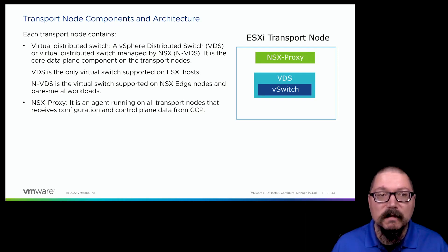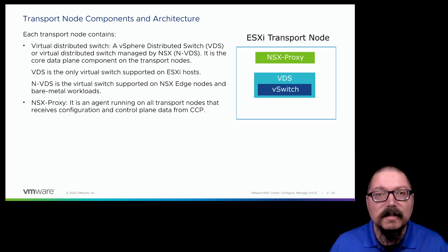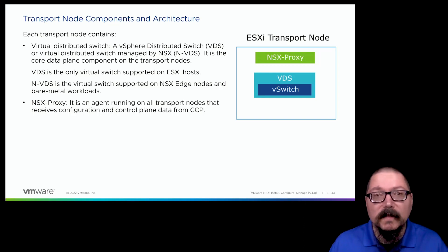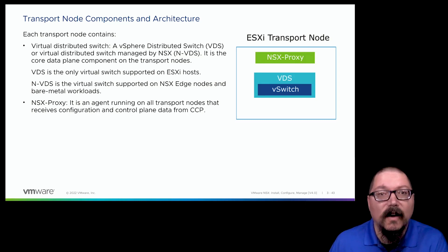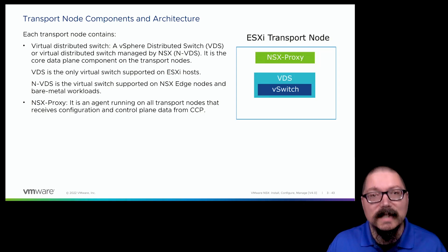The other major piece would be the virtual switch — the vSphere distributed switch on an ESXi instance — providing packet forwarding and processing capabilities. On a bare metal server or edge node, we use a virtual switch object called an NVDS, an NSX virtual distributed switch. We don't interact with those as much; we're already familiar with the vSphere distributed switch on ESXi.